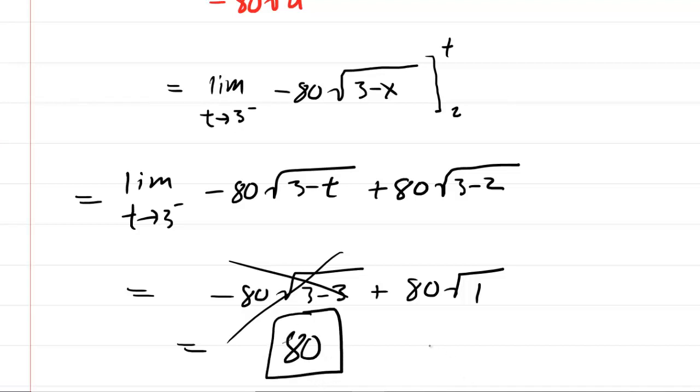Now because we obtained a finite result, we can conclude that the original integral was a convergent integral. So even though it had that discontinuity in it, we still obtain a finite result, which is a little bit strange perhaps, but the answer indeed is that it is convergent.